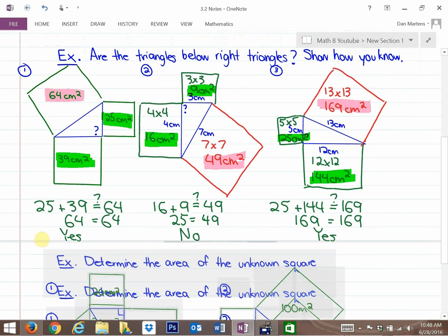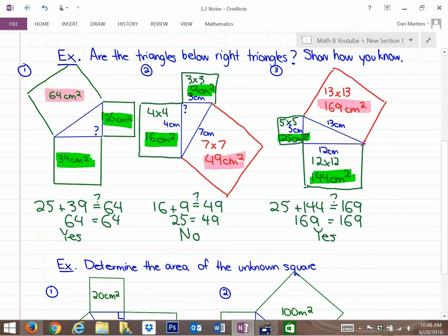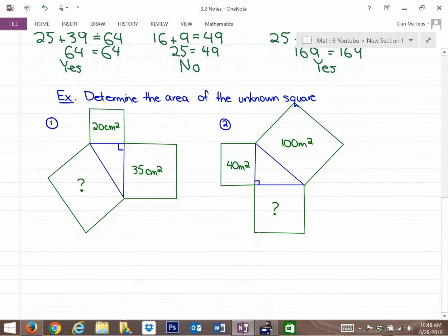So getting into the last question here, we're going to use the same concept, but just in a different and unique way. So what this question says is, determine the area of the unknown square. So it's still related to the same Pythagorean relationship. One thing you'll notice here is that we know that these are right triangles. So since they are, this is a right triangle, we know that the two smaller areas, these are areas, we know that because it has a squared on the unit, so it's centimeters squared and centimeters squared.